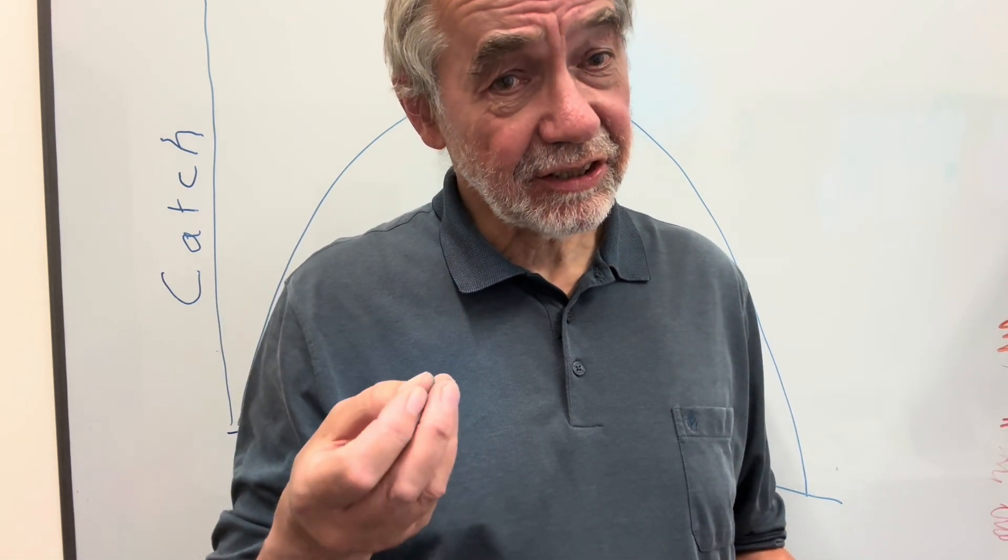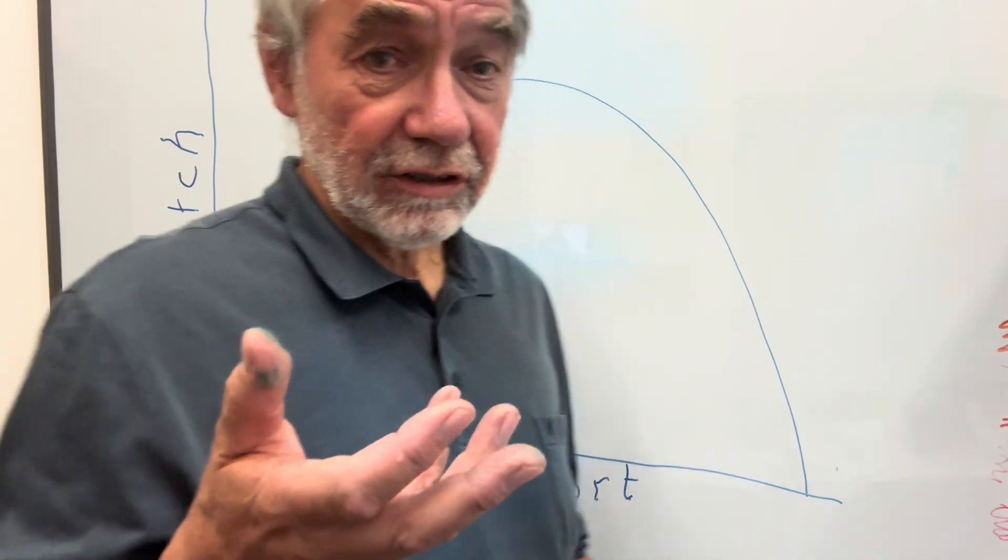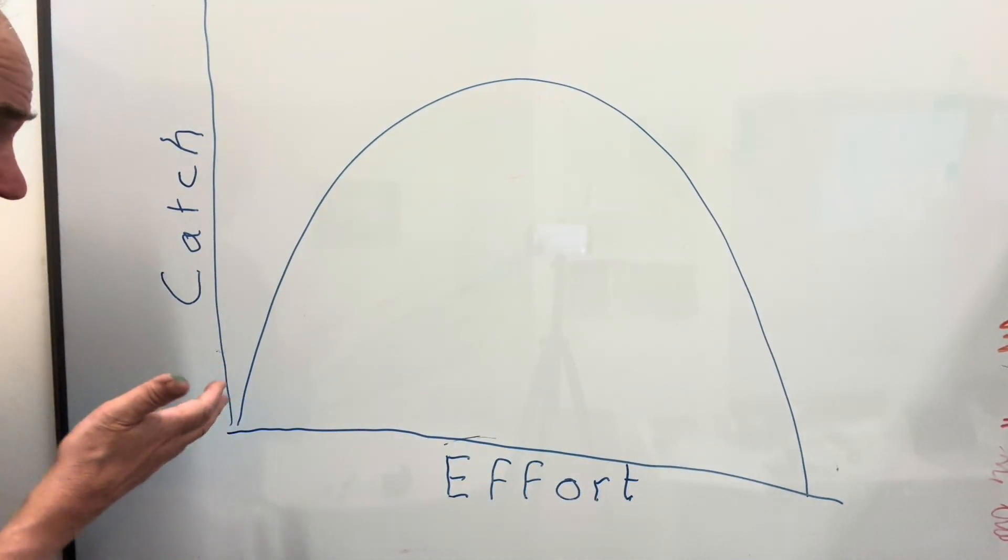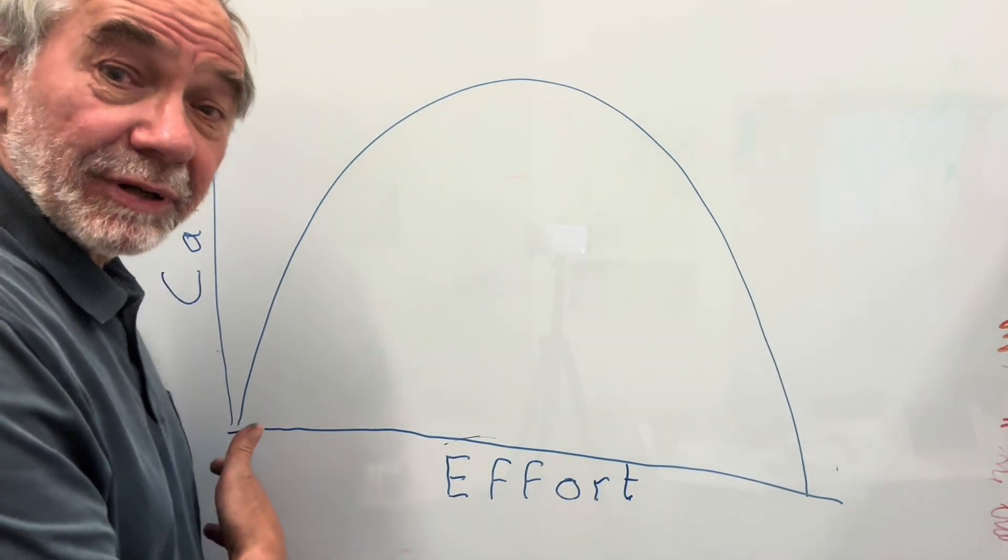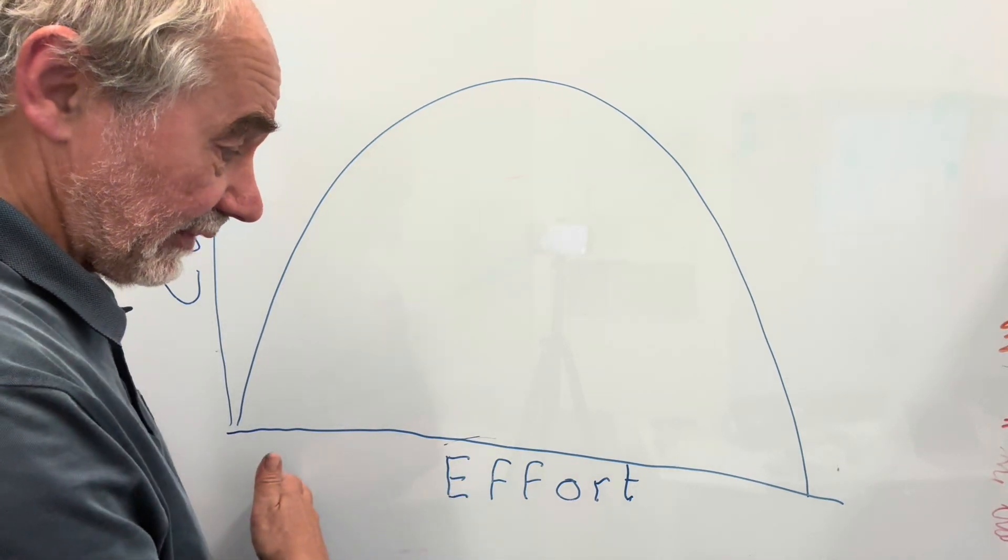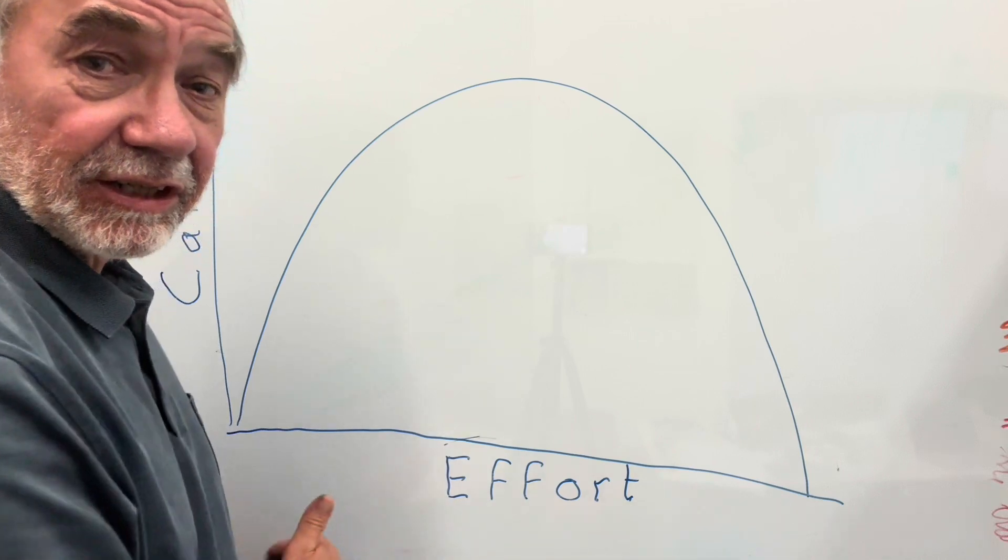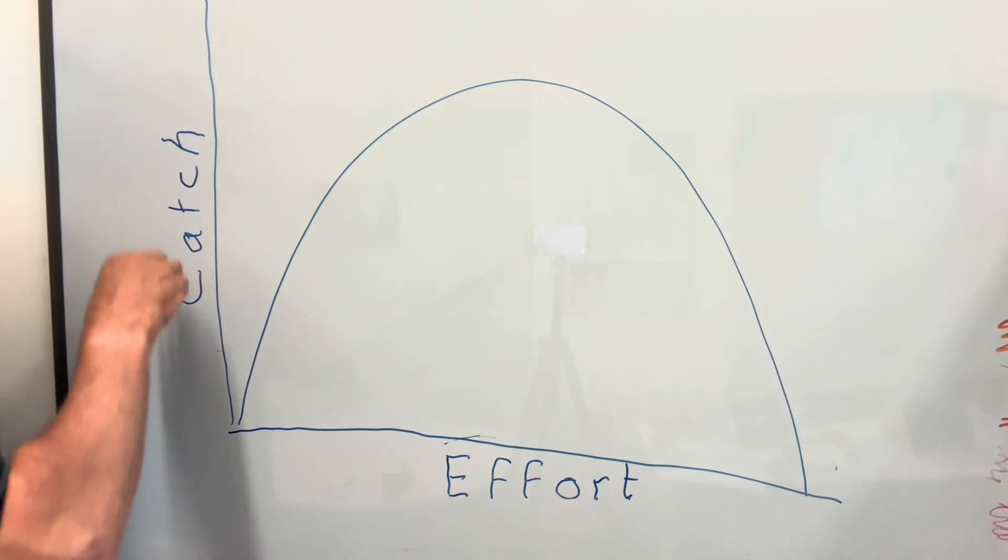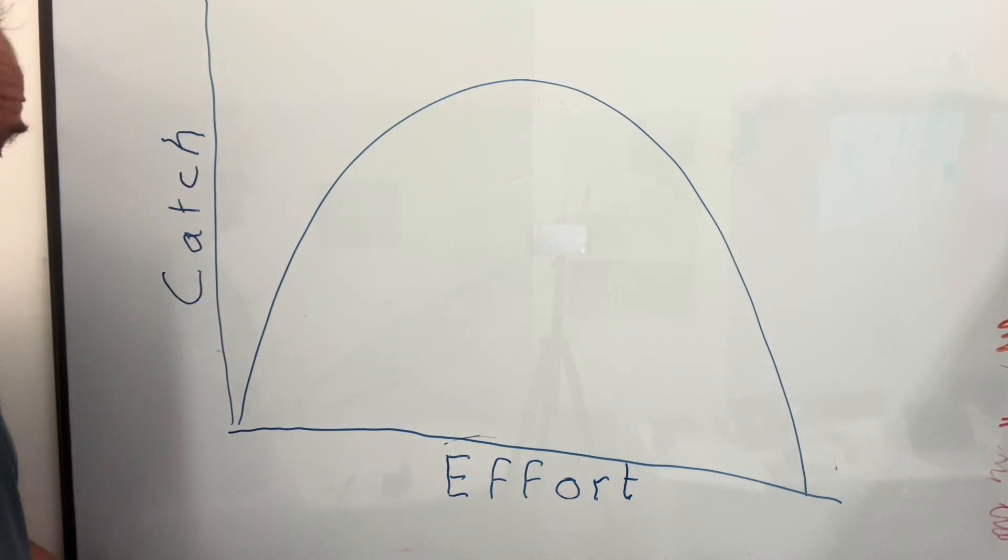As I see it there are six main definitions and I'm going to illustrate these with this simple example of open access fisheries. So this is the effort, the number of fishing boats, this is the catch, the value of the fish.